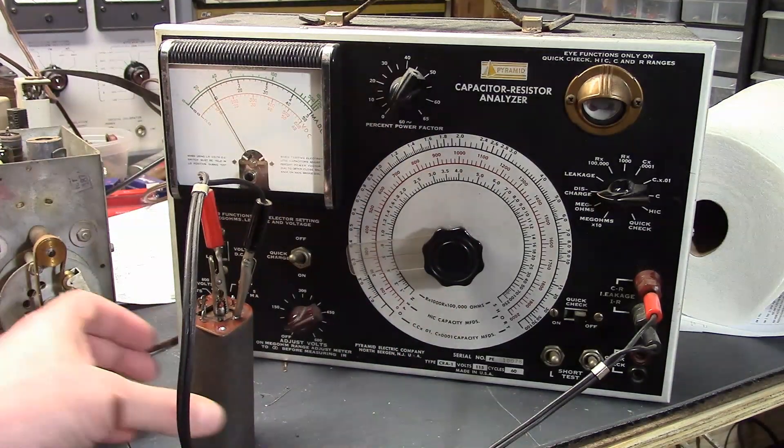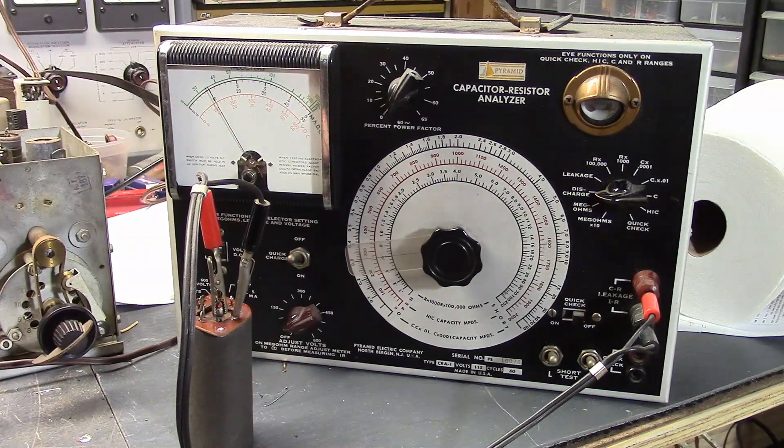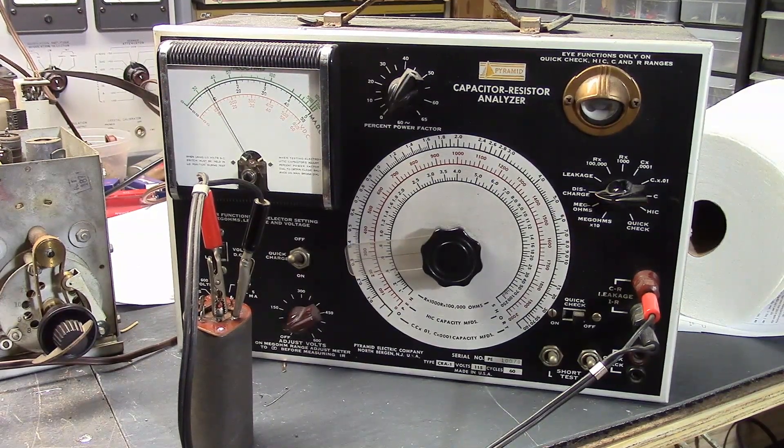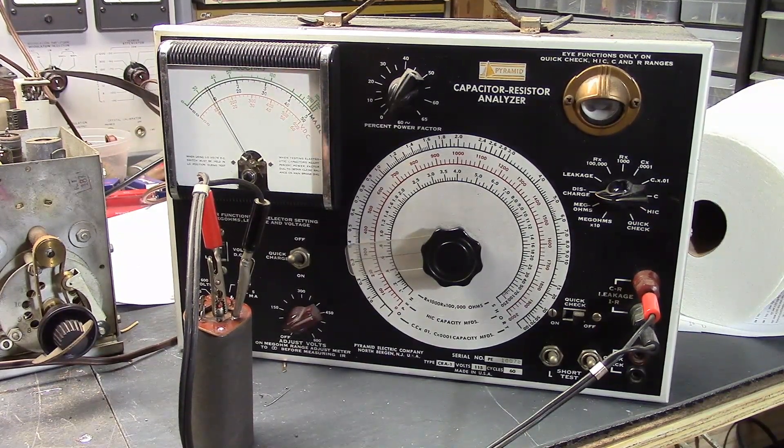So I often use that solar tester because it's quick and easy to use, but it doesn't show you the actual current, the leakage current, it just flashes if there's leakage. This will actually show us the leakage current.